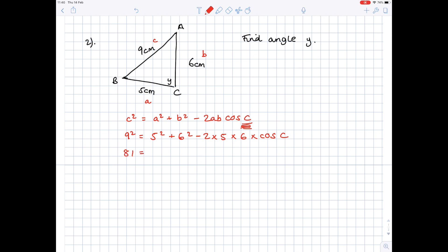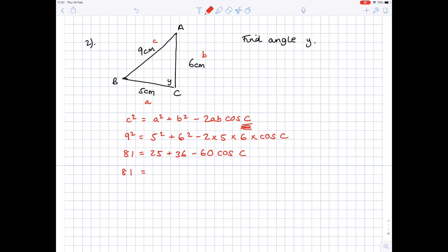Let's sort this out. 9² is 81, 5² is 25, 6² is 36, minus 2 times 5 times 6 is minus 60 cos C. We want to sort it out by collecting together the 25 and 36 to get 61 minus 60 cos C. Let's get all our numbers on the same side, so we're going to take away 61 from both sides to get 20 equals minus 60 cos C. Divide by minus 60 in order to make cos C by itself, and you get minus 0.3 recurring.